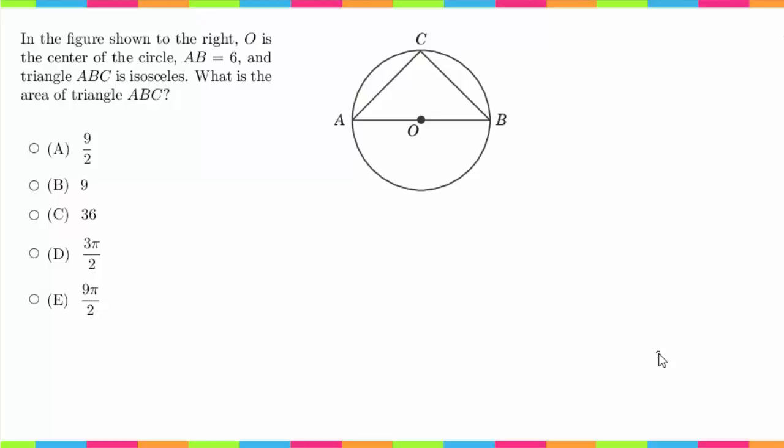Hey guys, welcome back. We are now working on question number 38, which says in the figure shown to the right, O is the center of the circle, AB equals 6, and triangle ABC is isosceles. What is the area of triangle ABC?